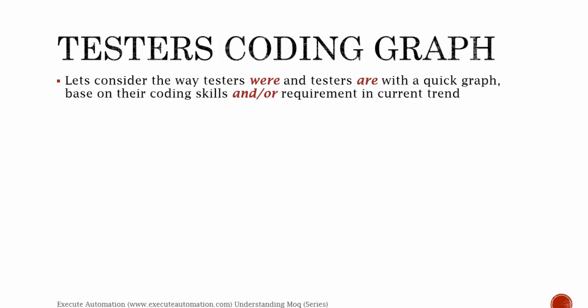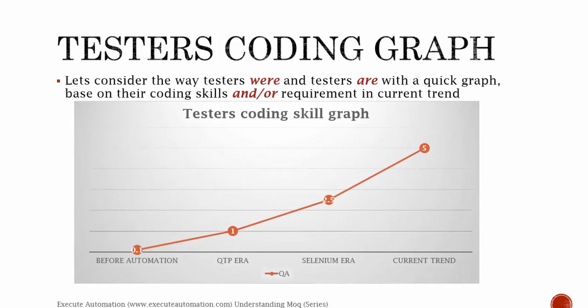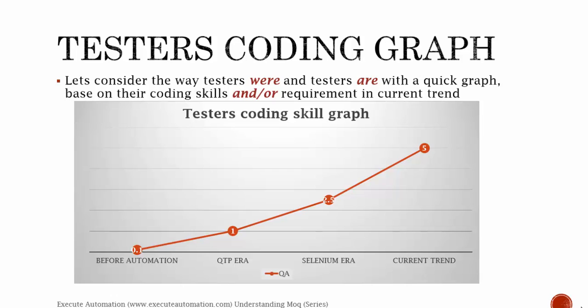Let's see a small testers coding graph, considering the way testers are with a quick graph based on their coding skills and requirements in the current trend. Before automation, there were only manual test engineers and they had very little programming skill — the programming skill required was just 0.1%, not more than that.